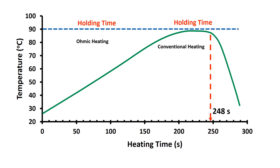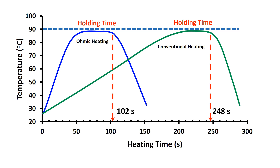Whereas in the case of Ohmic heating, the required processing time is 102 seconds. In this example, processing time could be reduced 2.4 times.